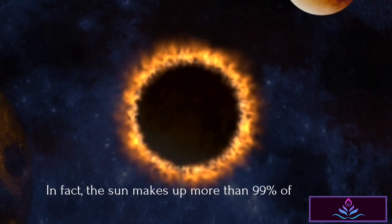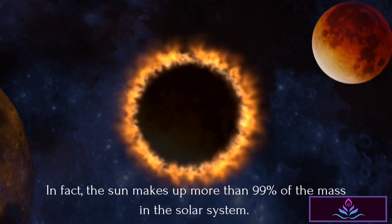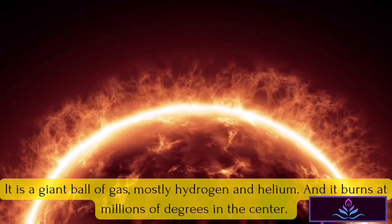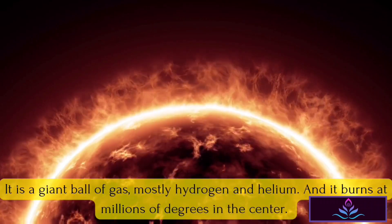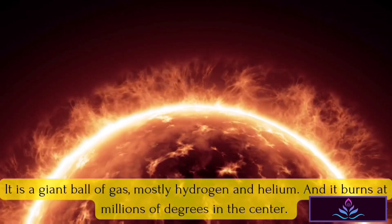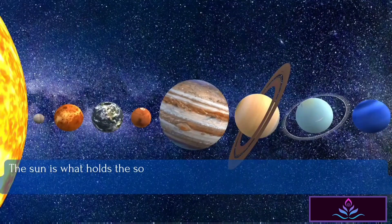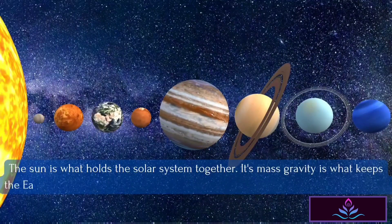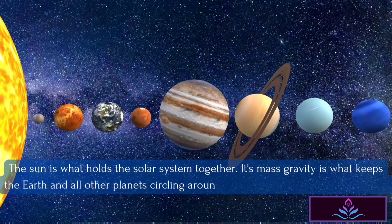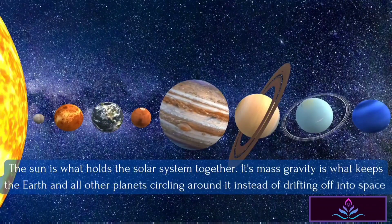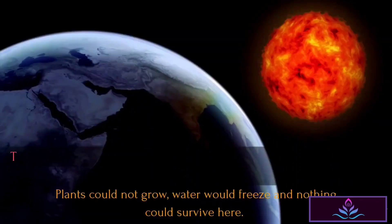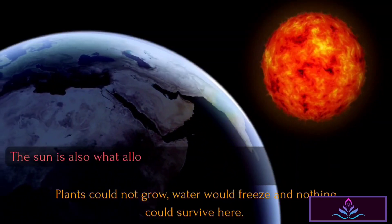In fact, the Sun makes up more than 99% of the mass in the solar system. It is a giant ball of gas, mostly hydrogen and helium, and it burns at millions of degrees in the center. The Sun is what holds the solar system together. Its gravity is what keeps the Earth and all other planets circling around it, instead of drifting off into space.